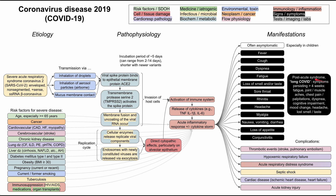It's worth mentioning the post-acute syndrome after COVID-19, sometimes called long COVID. This is when symptoms persist for at least four weeks. Typical symptoms of long COVID can include fatigue, joint and muscle aches, chest pain, chest palpitations, shortness of breath, cognitive impairment, mood changes, headaches, and persistent loss of smell and taste.